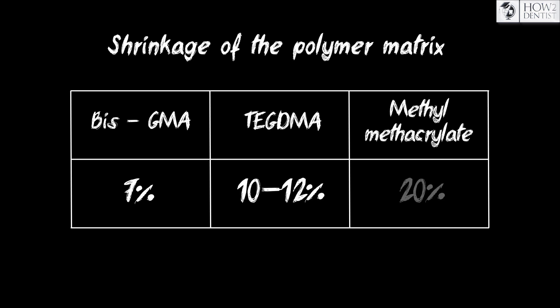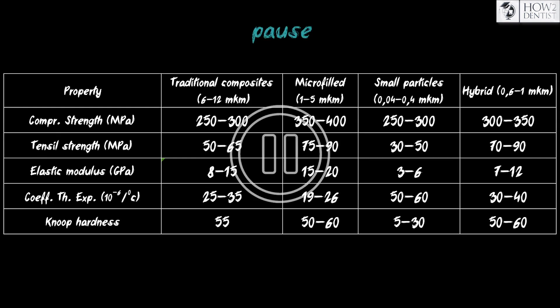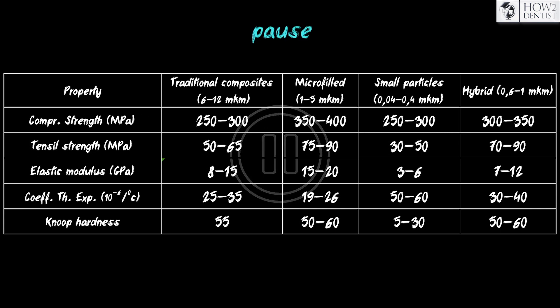Polymerization shrinkage is about 7% for Bis-GMA and 10-12% for diluent monomers, compared to 20% for methyl methacrylate, which is used in earlier versions of plastics. Particular importance for composites is the size of the filler particles, which determines the physical properties of the material.